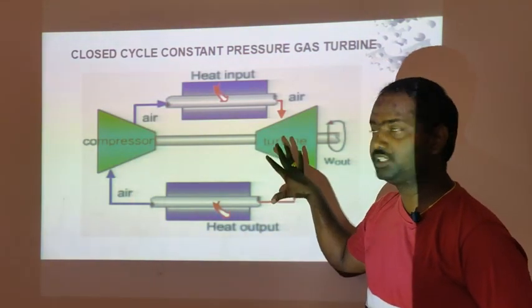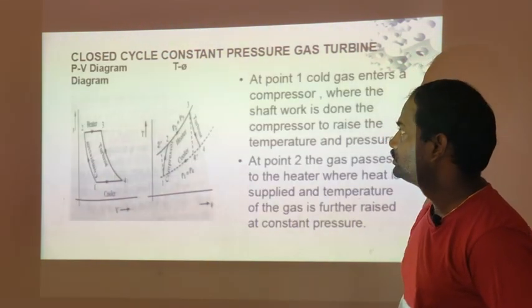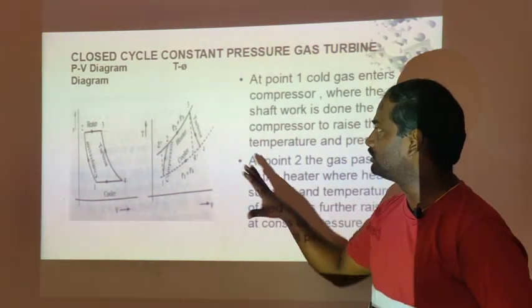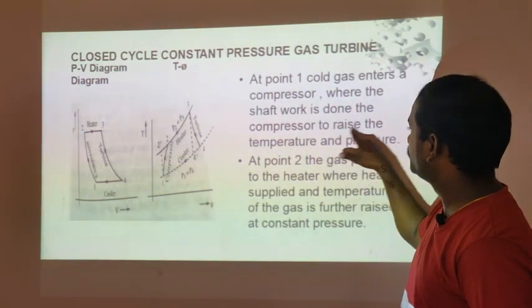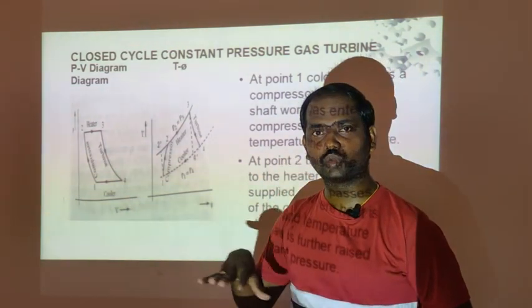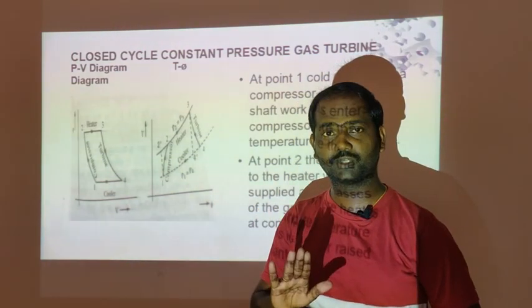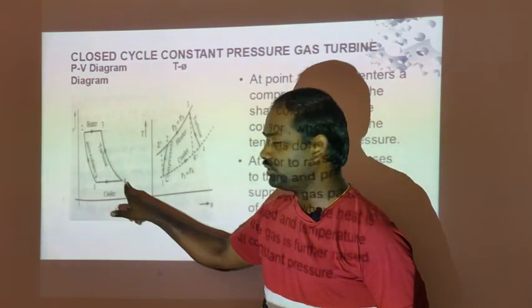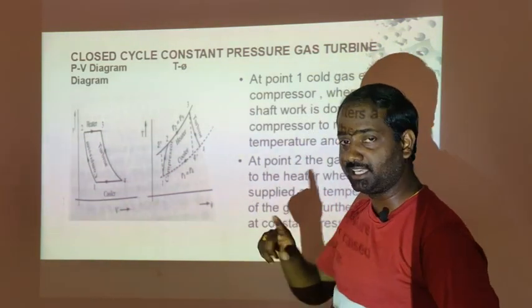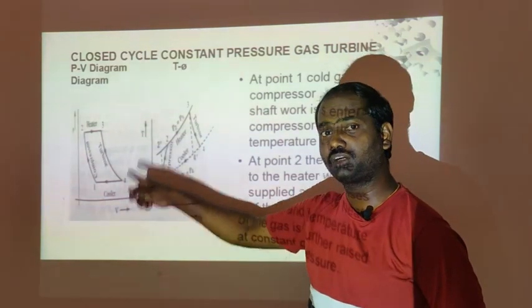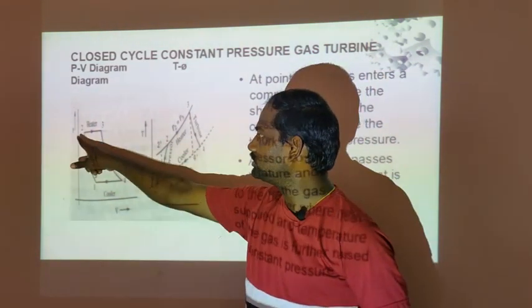This is the main working diagram — the P-V diagram and the T-S diagram. On the X-axis is V (Volume), and on the Y-axis is P (Pressure) for the P-V diagram.